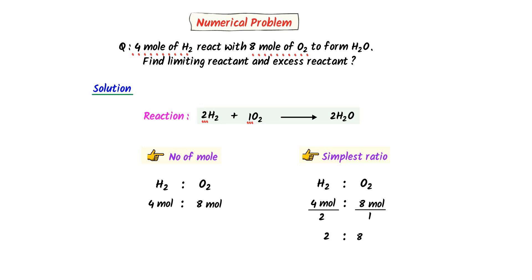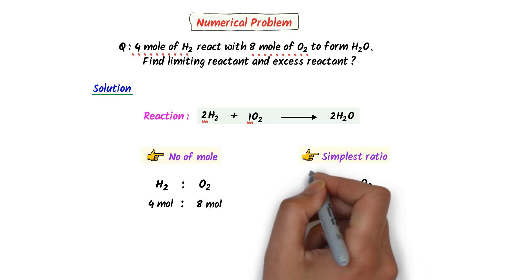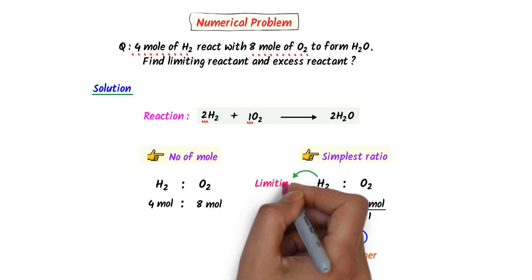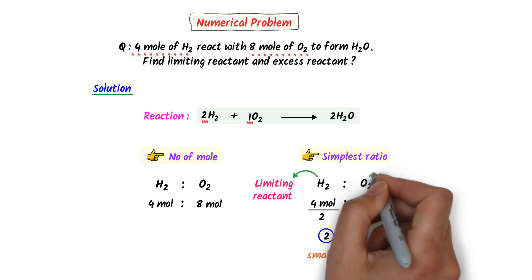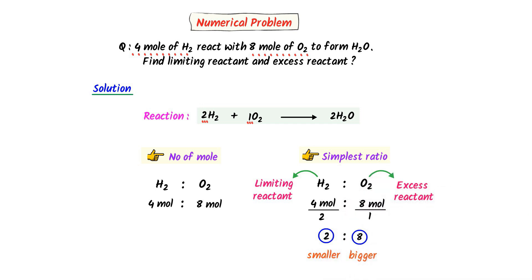The ratio of hydrogen gas is smaller. So, hydrogen gas is the limiting reactant and oxygen is the excess reactant. Thus, following these two steps, we can easily find the limiting reactant and excess reactant.